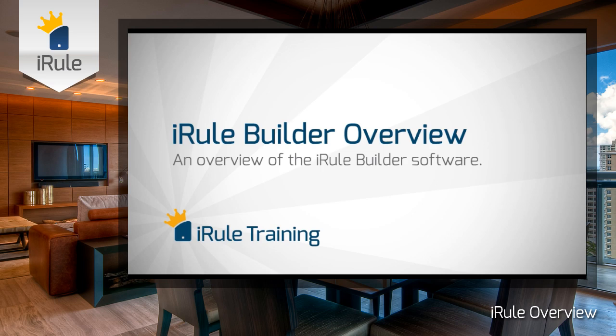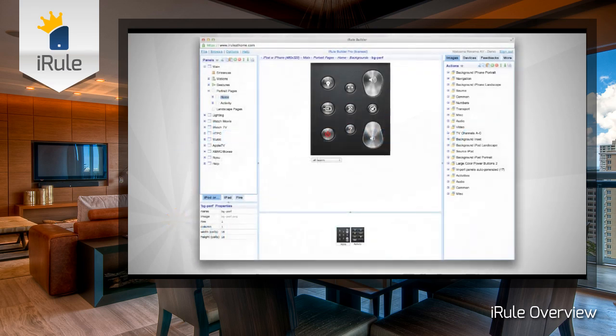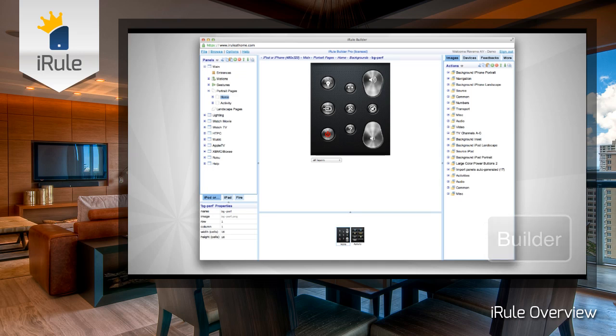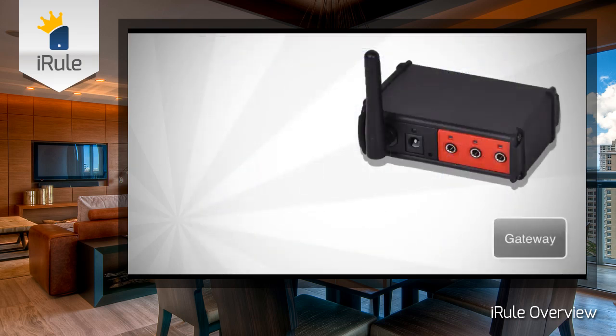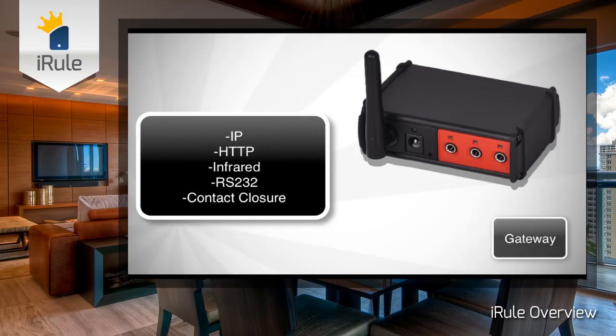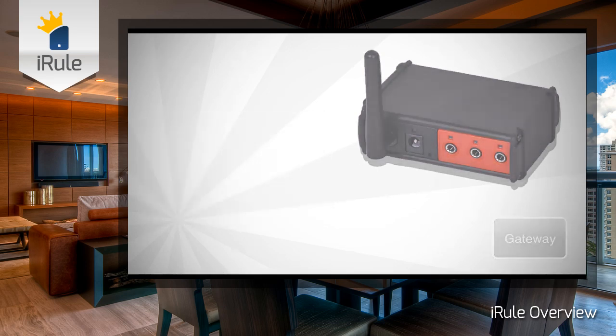In a nutshell, iRule is made up of three main components. You start in the iRule Builder — this is online and it's where you enter codes and design your remote control. A gateway is how your device talks to the iRule app. We can control several IP-controllable devices via network or HTTP protocols directly, or iRule can control infrared, serial (also known as RS-232), or contact closure devices via Global Cache gateways. Gateway advice and information can be found on our website support page.